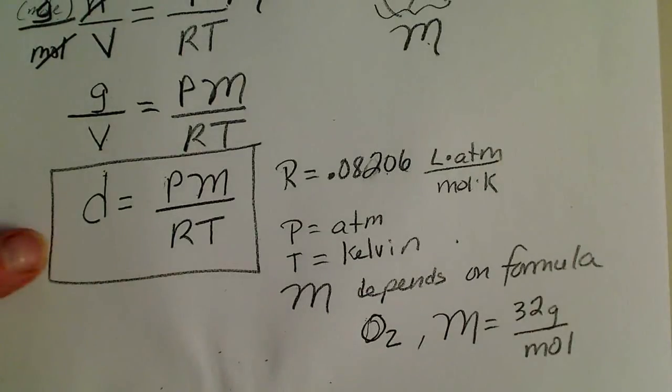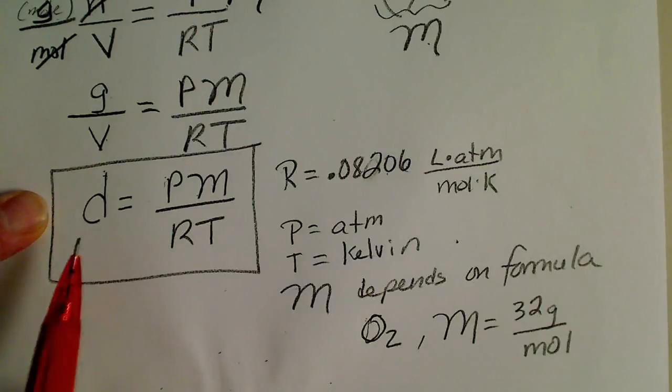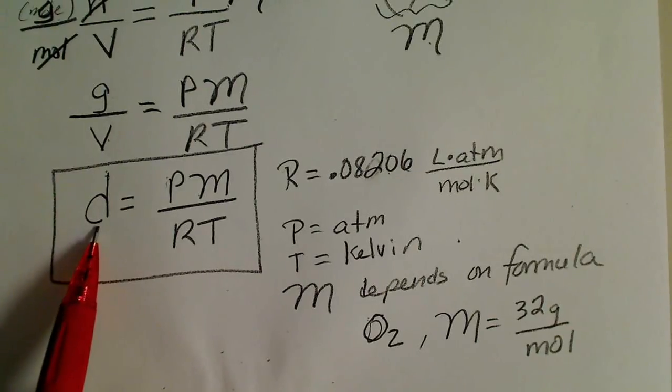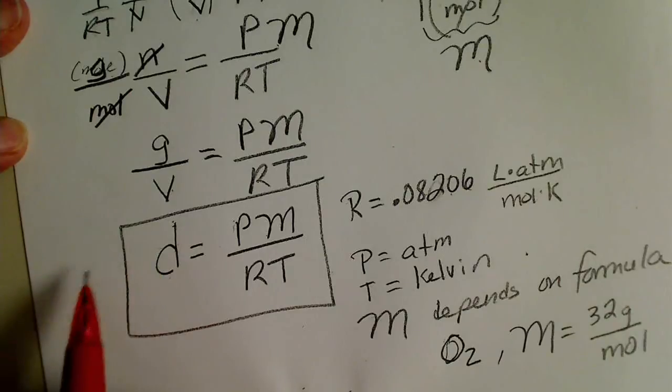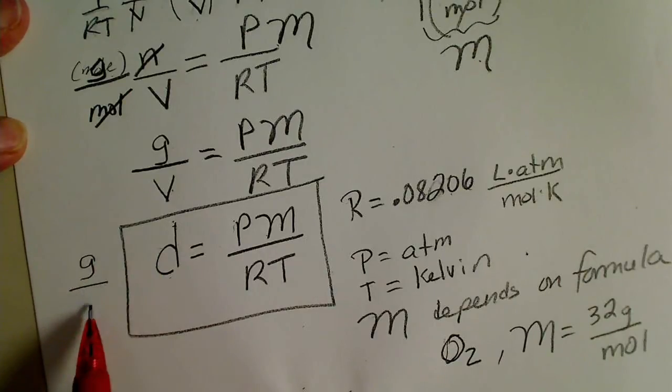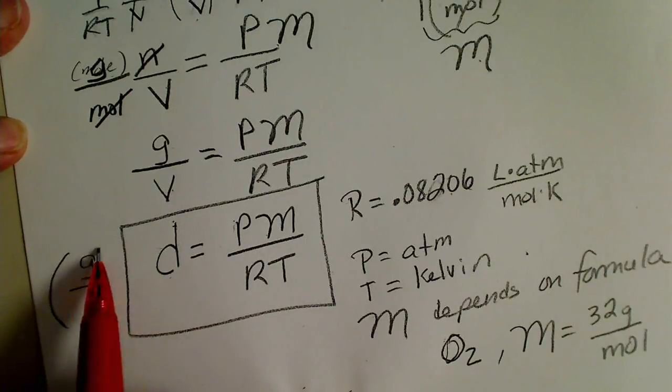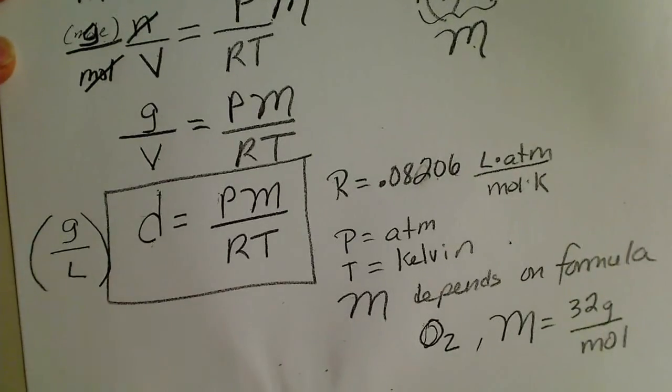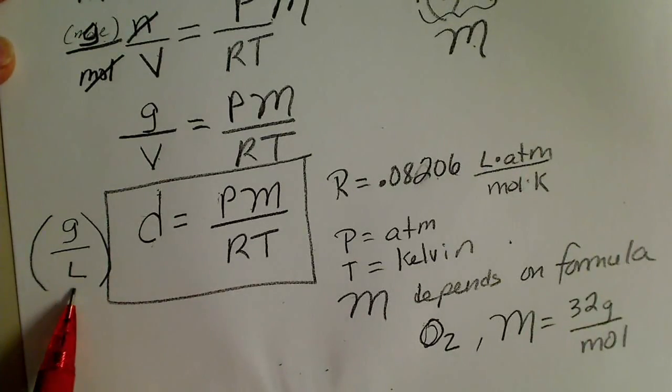So this is a very simple plug and chug type of equation. We could solve for any gas's density. The units that we get for that will be grams per liter. Typically, densities are often in grams per milliliter, but since gases take up so much space, we get better numbers if we use grams per liter.